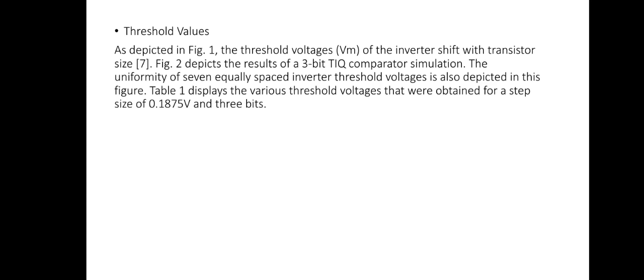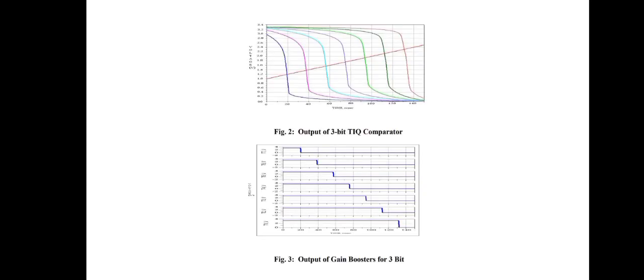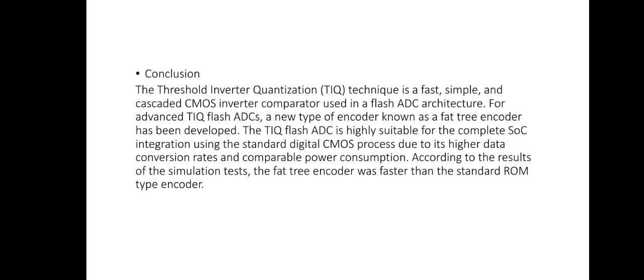Figure 2 shows the distributed result of a three-bit TIQ comparator simulation. The uniformity of seven equally spaced inverter threshold voltages is also shown. Table 1 displays the variety of threshold voltages obtained for a step size of 0.1875 volts at three bits. Figure 2 represents the output of a three-bit TIQ comparator and Figure 3 represents the output of the gain booster for three bits.